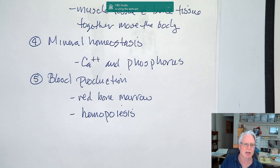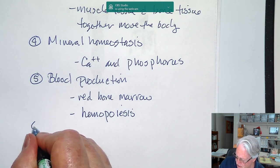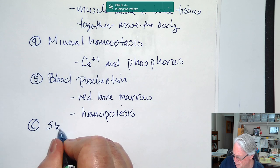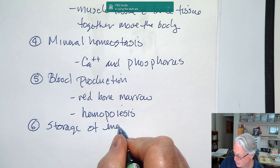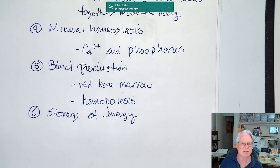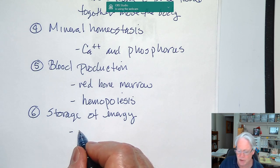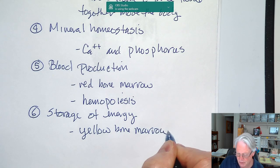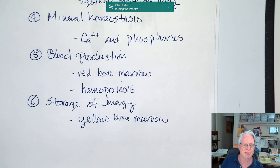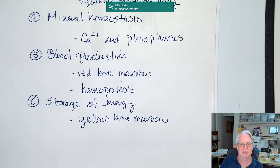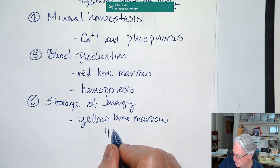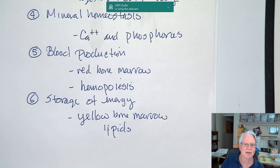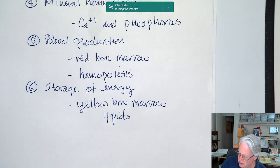Number six is storage of energy. Here we're talking about adipose tissue and triglycerides, found in yellow bone marrow. This is the center of the shaft of the long bone — the medullary cavity — which is filled with yellow bone marrow, which is lipids. We get storage of energy because lipid is an energy molecule.